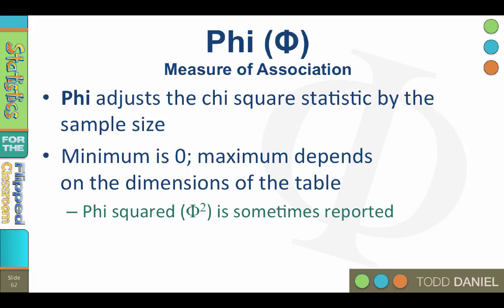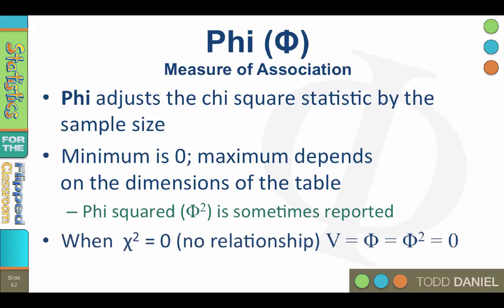You may also see phi-square reported as a measure of association. Phi, phi-squared, and Cramer's V are actually quite similar. In fact, when there is no relationship between the variables — in other words, when chi-square equals 0 — then Cramer's V, phi, and phi-square will also all equal 0.